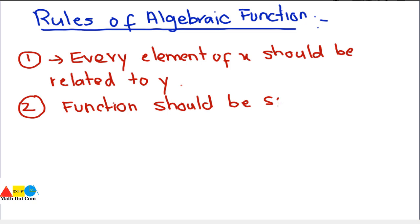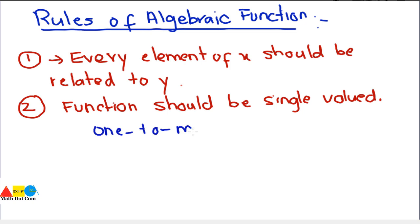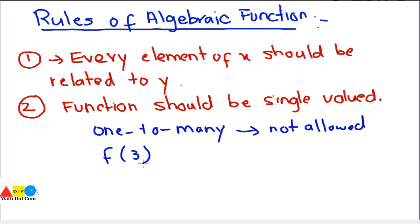Condition two: the function should be single-valued. This is a very important condition. In ordered pairs, we saw that every element of x should be mapped to a single element of y. A one-to-many relation between input and output is not allowed. This means if we evaluate the function at x = 3, the output should not give two values like 4 or 5 simultaneously.